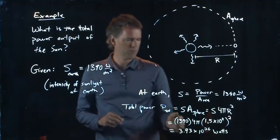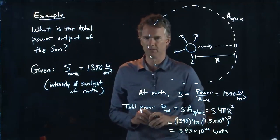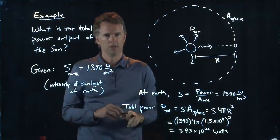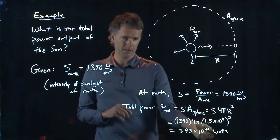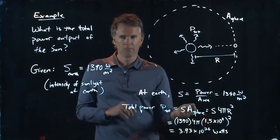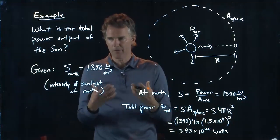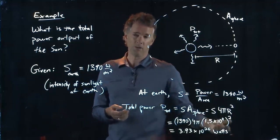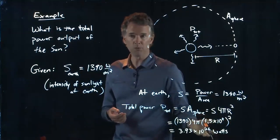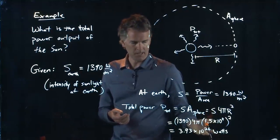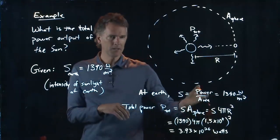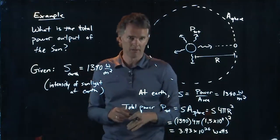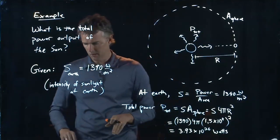3.93 times 10 to the 26 watts for the total power coming out of the sun, which is a pretty big number. When we were talking about how much power your hair dryer uses, it was like 1.5 kilowatts, like 10 to the 3 watts. And here's something that is 23 orders of magnitude bigger. So like you would expect, it's a lot of power coming out of the sun.